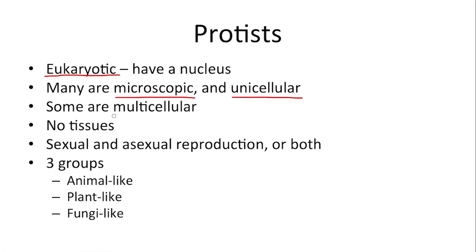Now there are protists that are multicellular, but they all have in common that they do not have any tissues. Other differences are in their type of reproduction. Some can reproduce sexually, some reproduce asexually, and some can actually do both, depending on the conditions.